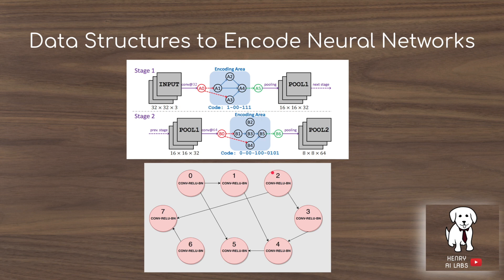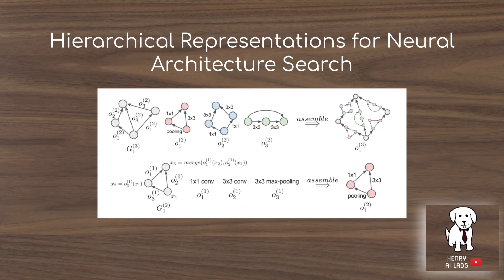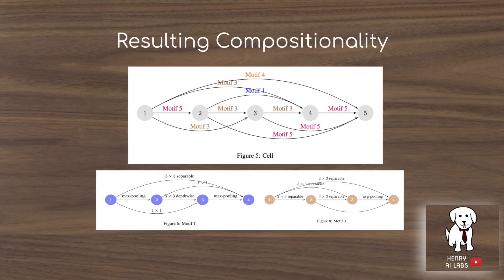In randomly wired neural networks, graph permutation algorithms like the WS algorithm can be used to construct graphs that are then converted to directed acyclic graphs to represent neural network architectures. In hierarchical neural architecture search, we represent neural networks as a composition of blocks. The first block, G sub 1, is a representation of 1x1 convolutions, 3x3 convolutions, and 3x3 max poolings combined to form a substructure. These substructures are then combined to form an overall massive neural network.